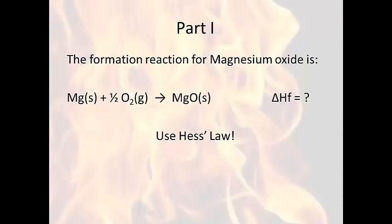Part one is the formation reaction for magnesium oxide, given by this equation: magnesium plus oxygen gives us magnesium oxide. We would like to know what the energy change, or enthalpy change, is for this reaction. When you determine the enthalpy change from elements to a compound, it's called the heat of formation. We're going to use Hess's law to figure this out.